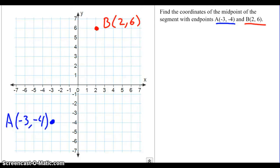Hello, in this video we are going to use the midpoint formula to find the midpoint between two points. In this case, the endpoints of our segment A is at negative three comma negative four and B is at two comma six. You can see I have them plotted already in blue and red.